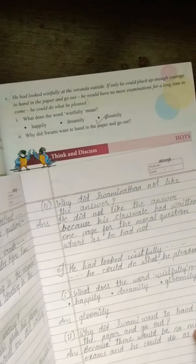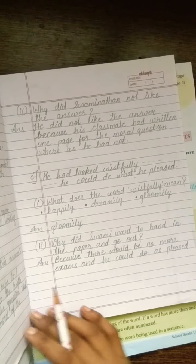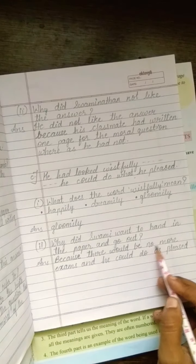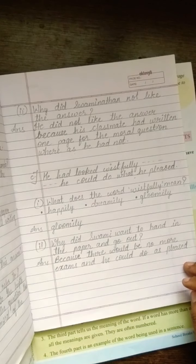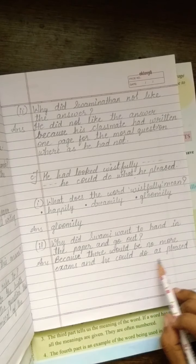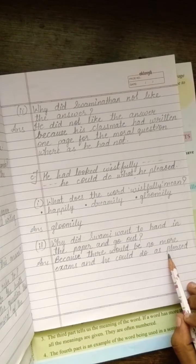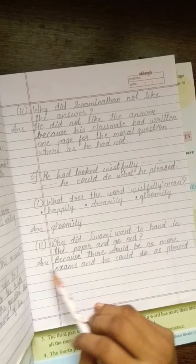Now, come to the second question. Why did Swami want to hand in the paper and go out? Kyu jaldi thi? Because there would be no more exams and he could do as pleased. Kyu jaldi thi Swaminathan ko? Because he wanted to go. He wanted to leave his exam and after the completion of his exam, he can do whatever he want. Repeat.